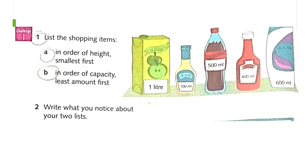Let's start with Challenge One. Question one: list the shopping items. You can see here a one-liter drink, 100 milliliter bottle, 500 milliliter coke, 400 milliliter sauce, and 600 milliliter hair shampoo. Part A asks you to list items in order of height, smallest first. Look at the height — which one is the shortest? The 100 milliliter bottle — that is the shortest among the rest.